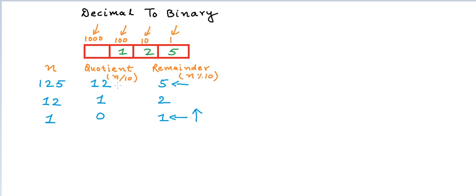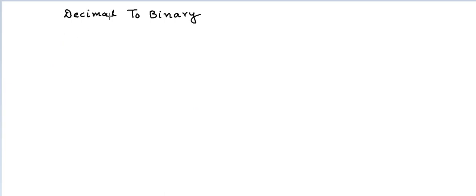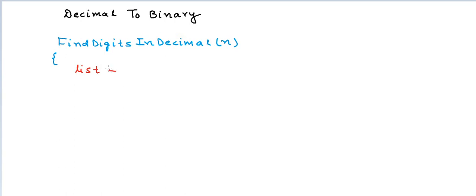Now, if you can see, we have actually devised an algorithm here to find out all the digits of the number n. We will quickly write a pseudocode for this. I will write a method called find_digits_in_decimal that will take an input n and give me a list of all the digits in the decimal representation of the number. So, we will start with an empty list and we will keep filling the list as we find out all the digits.